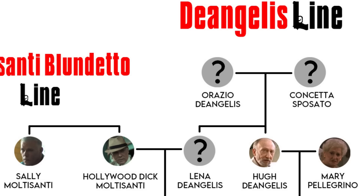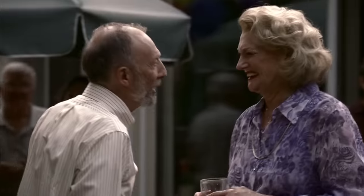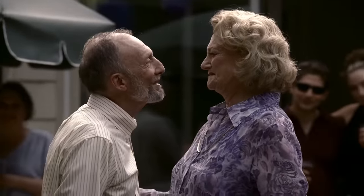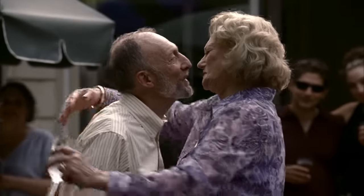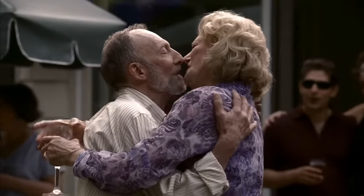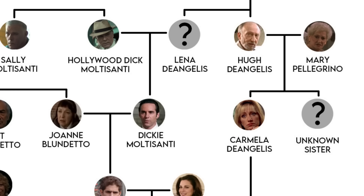Finally, for this family, we have the DeAngelis line. The first generation is Orazio and Conchetta. They would have at least two children that we know about: Lena and Hugh. Hugh married Mary Pellegrino and had two daughters, Carmela and an unnamed sister. This sister is referenced a few times in the early seasons, but we're never given a name and she's never brought up again, so her status is unknown.